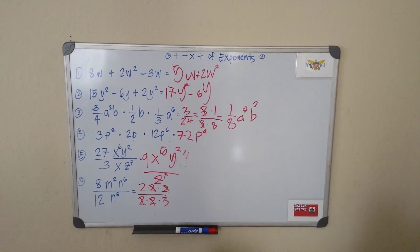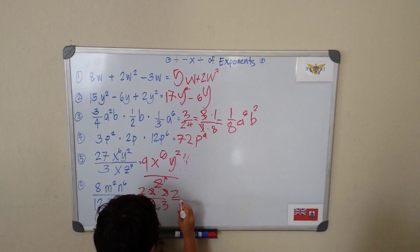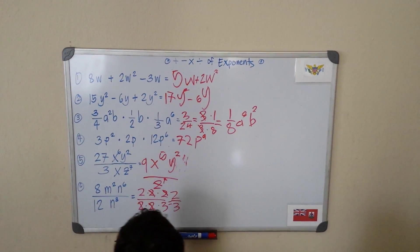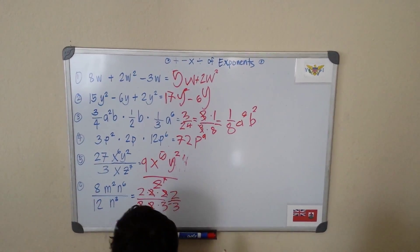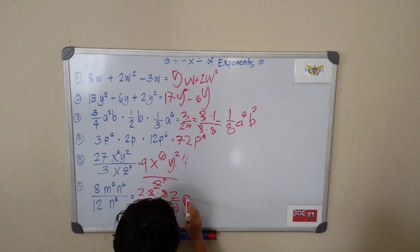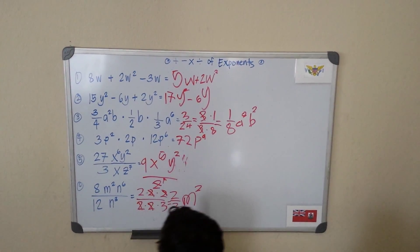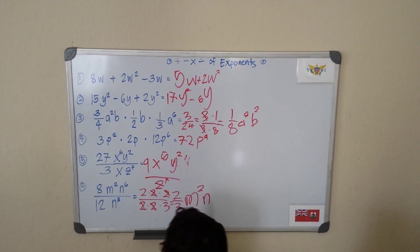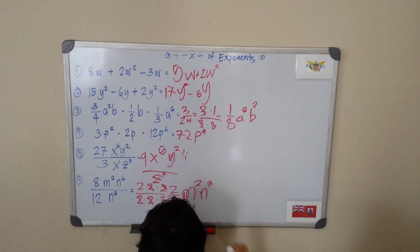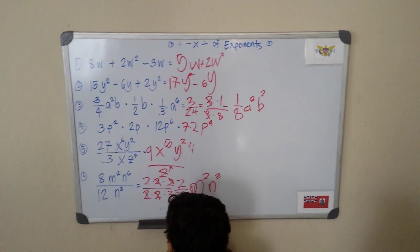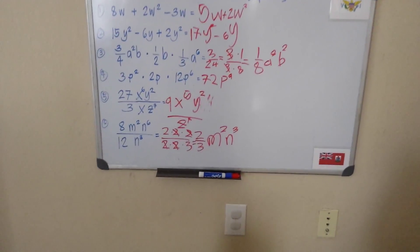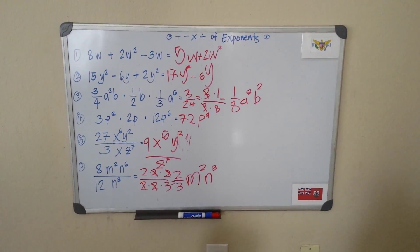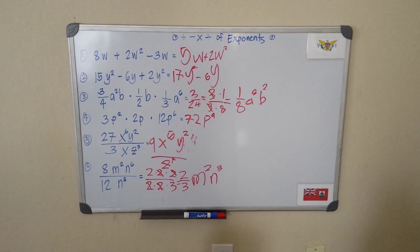Cancel those 2s. So my answer is 2 over 3, M to the third power. That's my answer: two-thirds M squared N cubed.